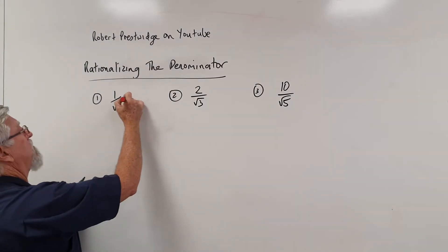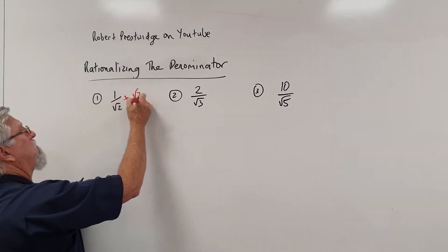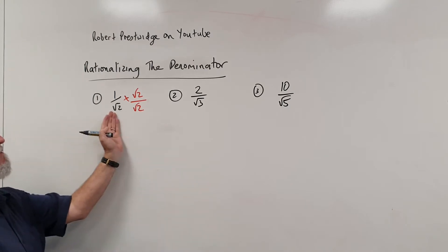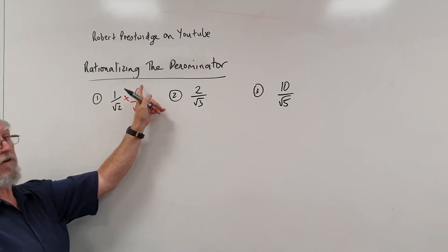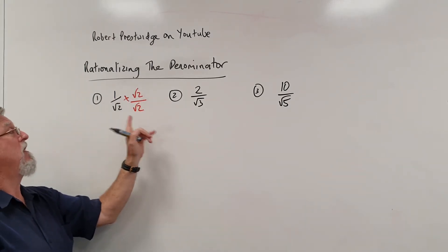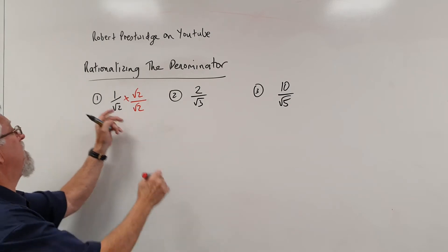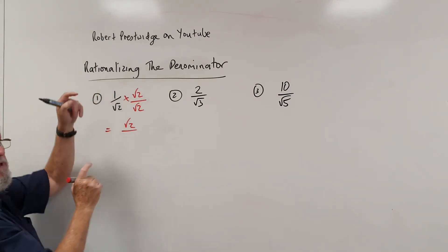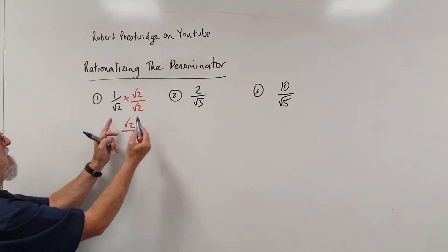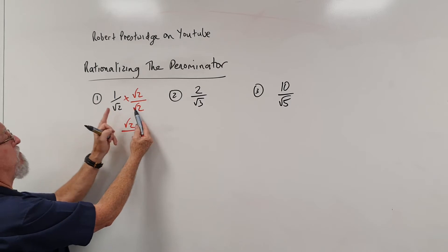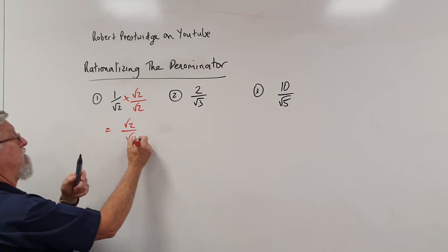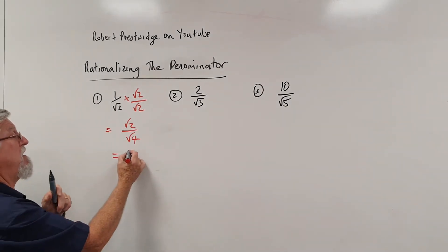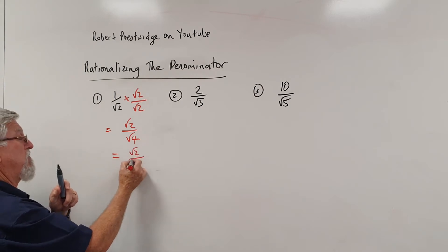So if I multiply the top by root 2, I multiply the bottom by root 2. So you get whatever that number is multiplied by itself, which is the same as multiplying by 1. So the top becomes root 2. Root 2 by root 2 is actually root 4 if we do it the long way. And the root of 4 is 2. So it's root 2 on 2.